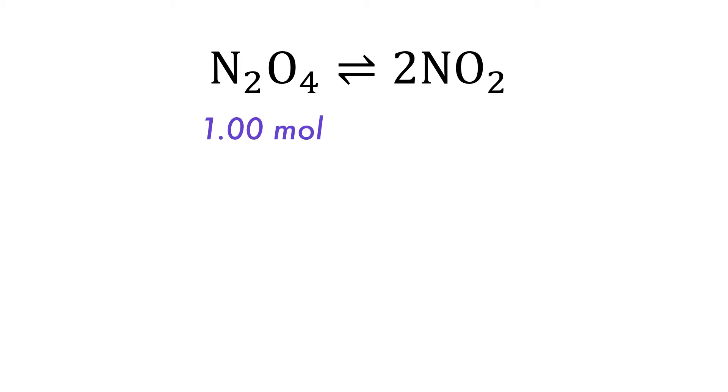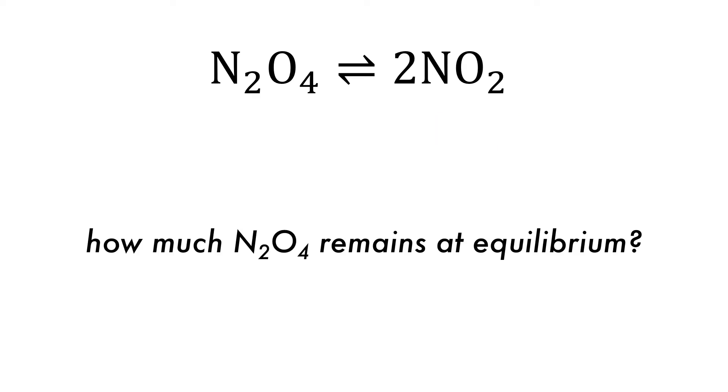If, for example, initially there is one mole of nitrogen tetraoxide in the closed system and then when the system reaches equilibrium there were 1.8 moles of nitrogen dioxide in the system, how much of the nitrogen tetraoxide remains at equilibrium?